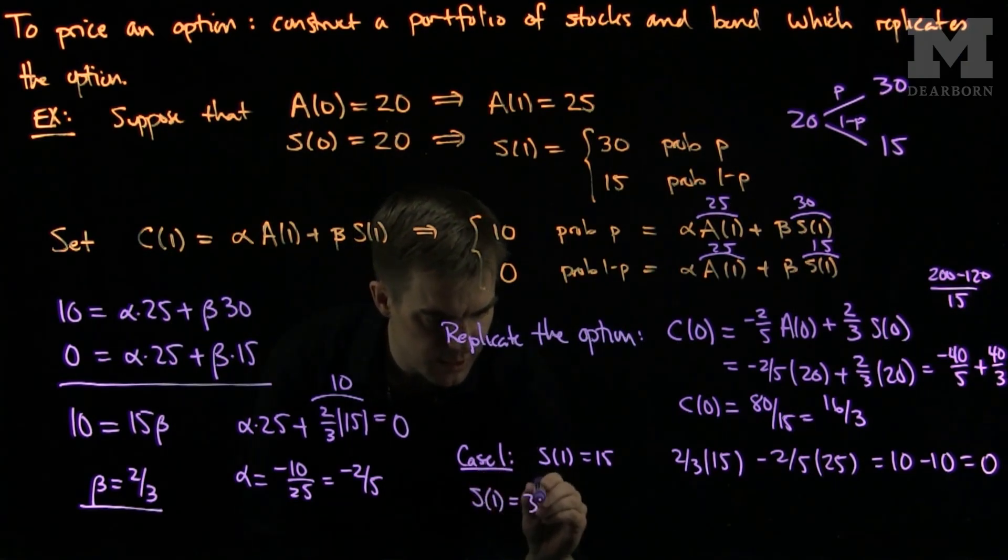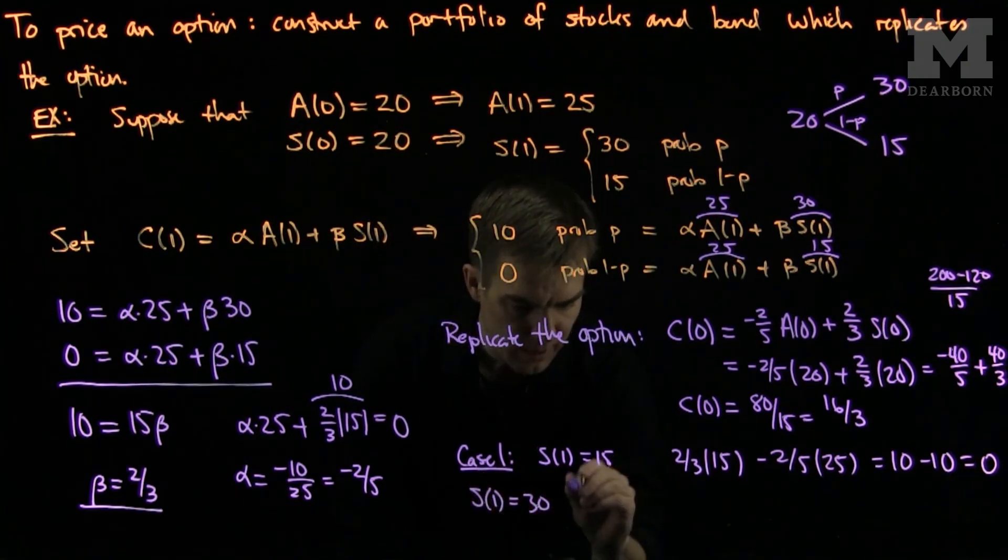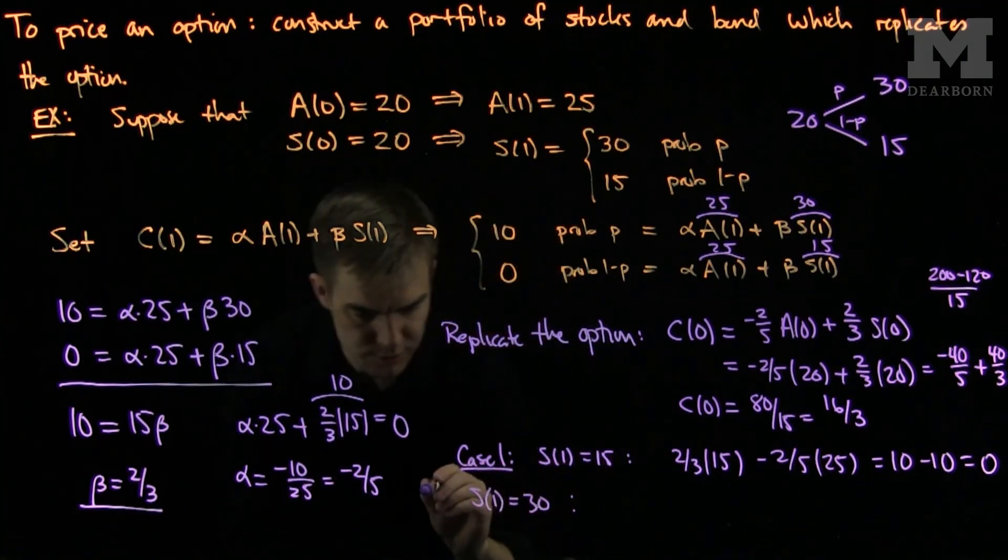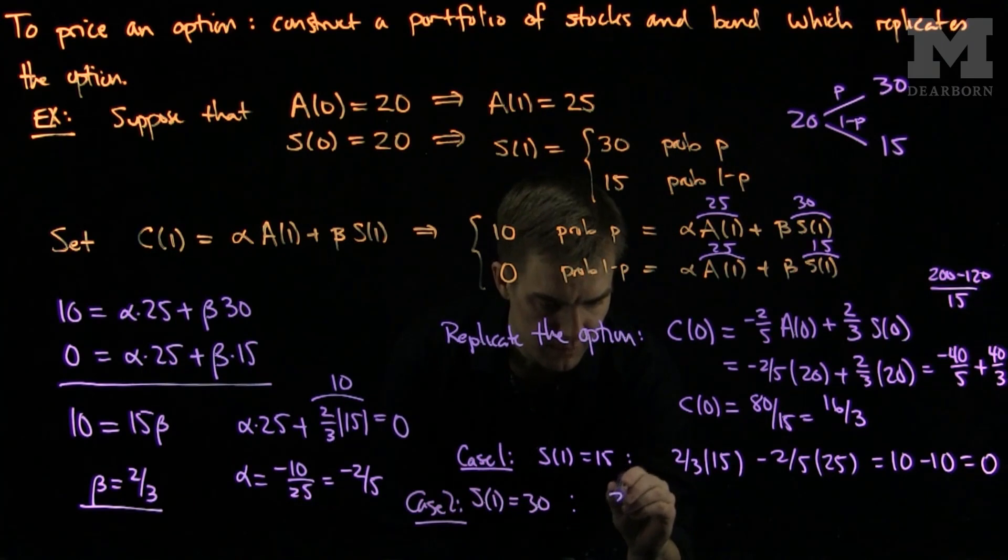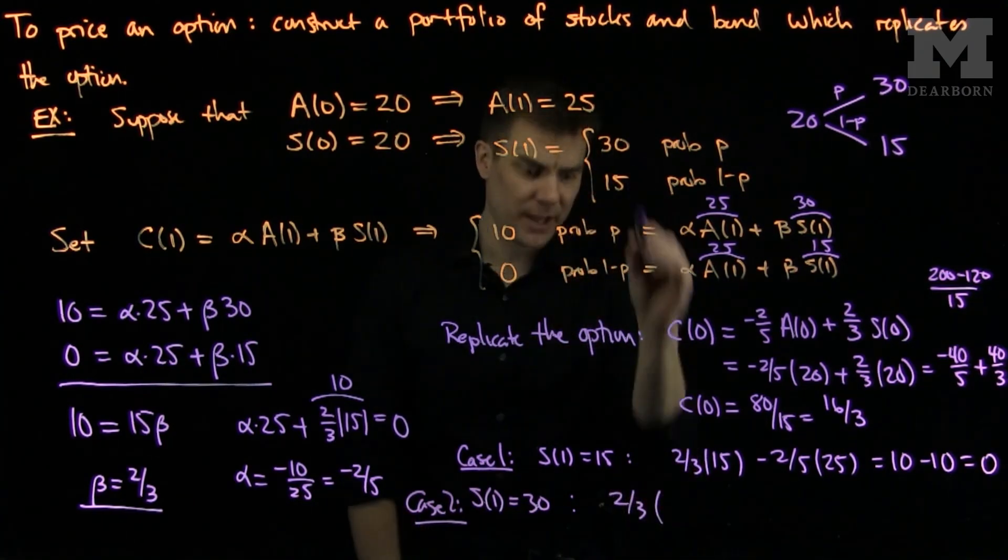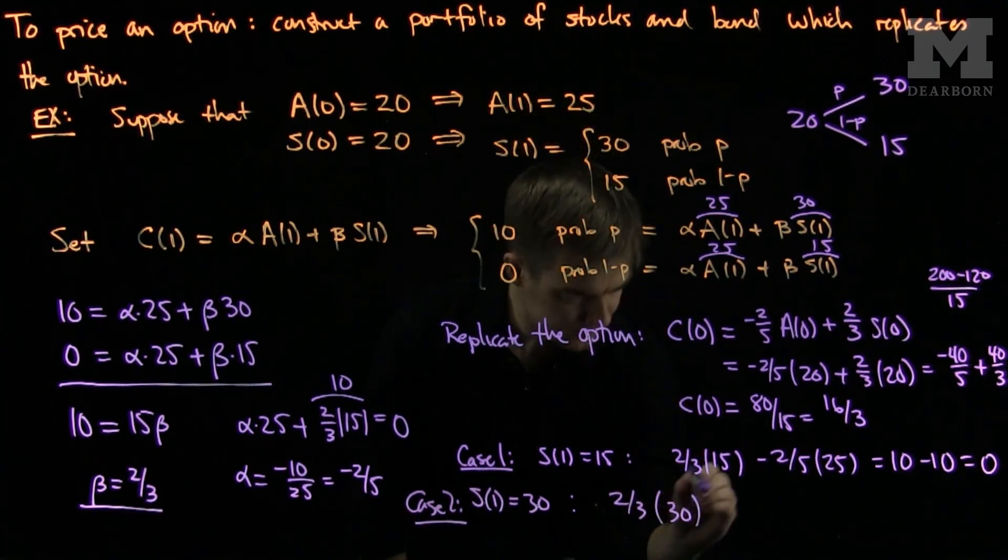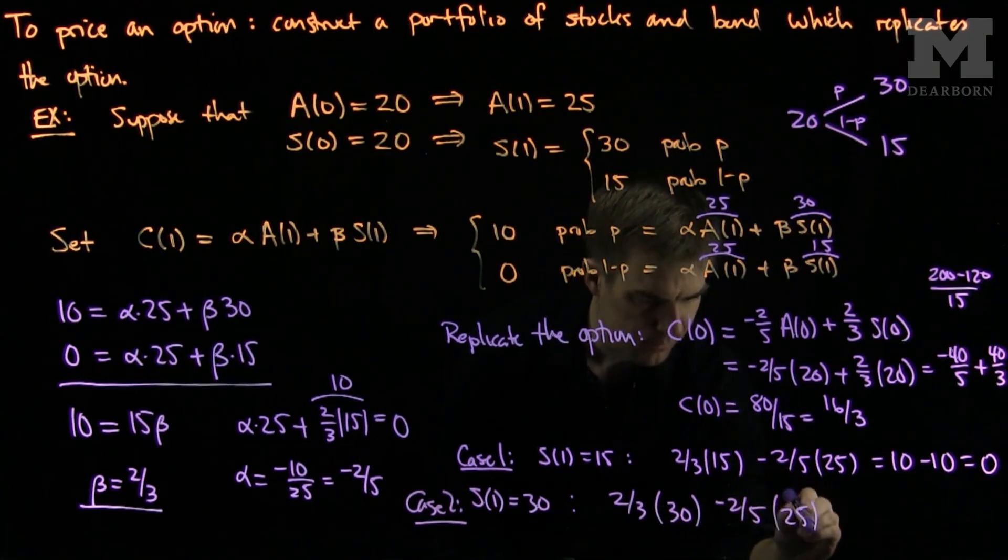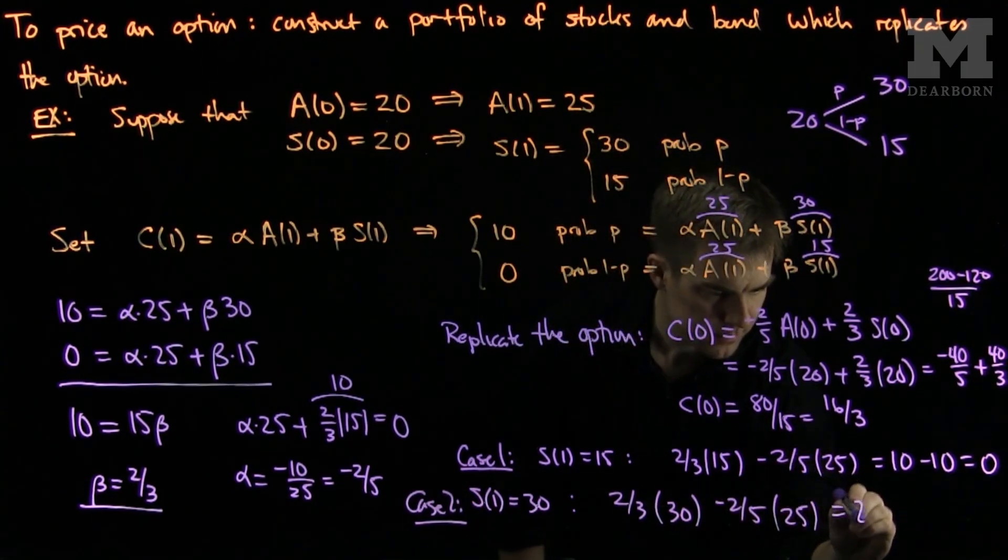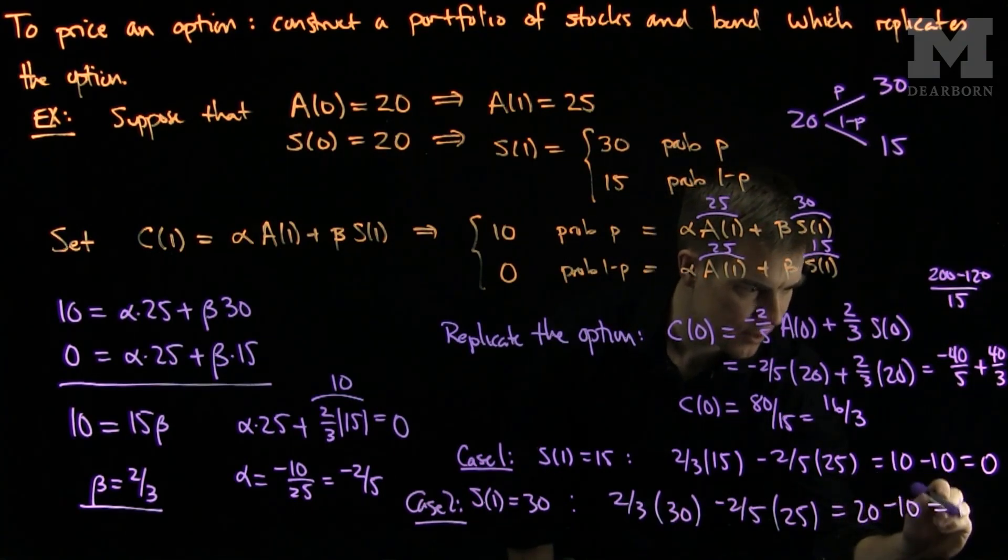In case 2, when S(1) is 30, this is case 2. We will have 2/3, not of 15, but 2/3 of 30 minus 2/5 of 25. And this will be 20 minus 10, which is 10.